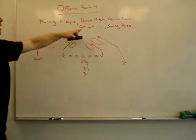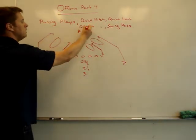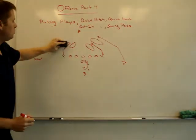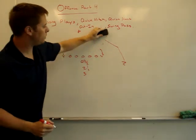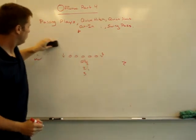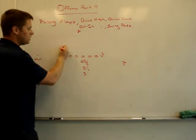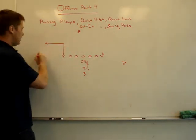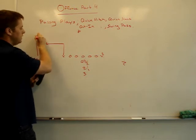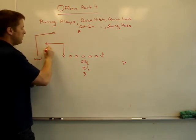The next route that I want to talk about is the out-in route. So this is another one designed to get the ball to the X or Y with W and Z as the secondaries again. So X would run the out and then W or Z would run a ten and in. So we're at different levels.